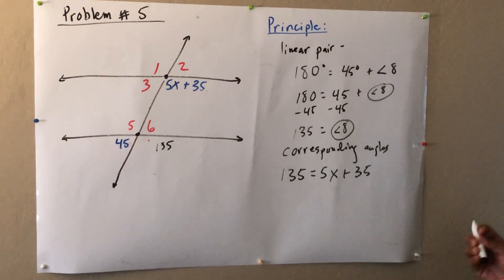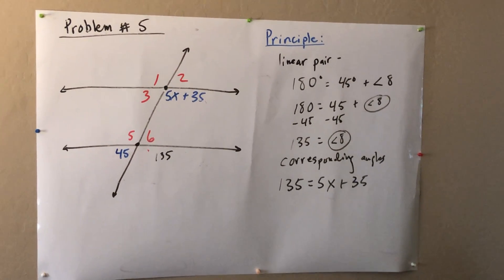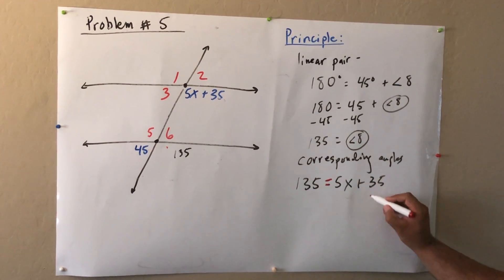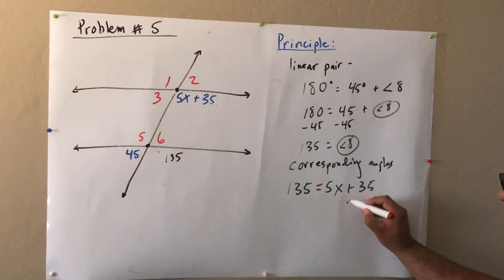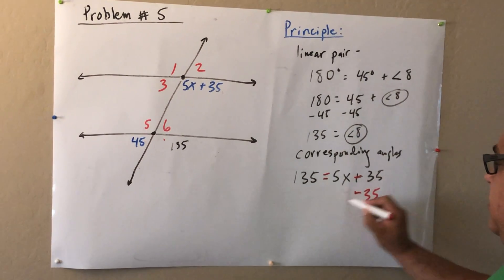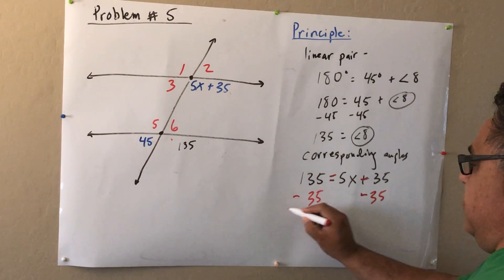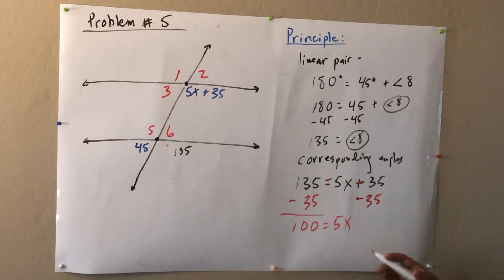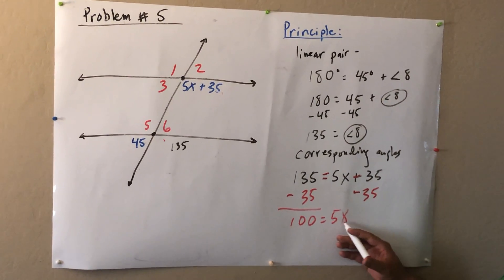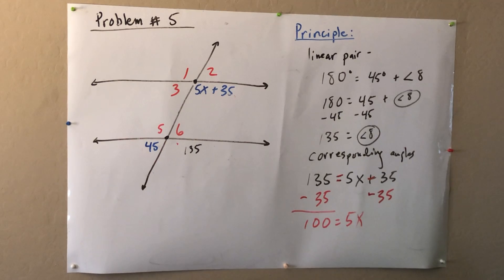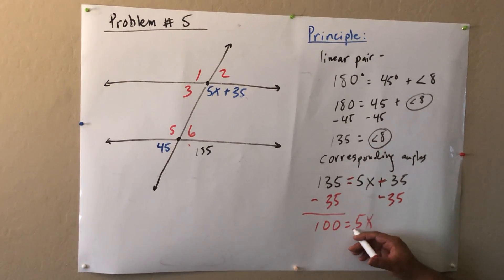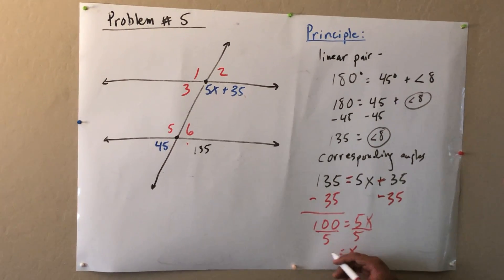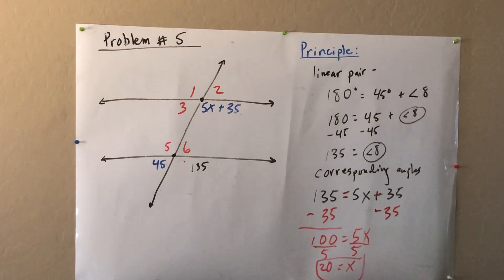Once I know that they're corresponding angles, I set them equal to each other knowing that they're congruent. Congruent means equal to each other, so that's where I'm getting this equal sign from. And now we can solve for x. The inverse of plus 35 is minus 35. This is going to be pretty easy because 135 minus 35 is 100. We talked about this in almost every video. When two things are side by side, that means multiply. In math it's saying take 5 times x. The opposite of 5 times x is divided by x. And x is going to equal 20. 100 divided by 5 is 20.